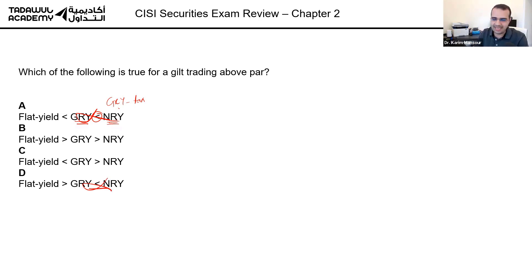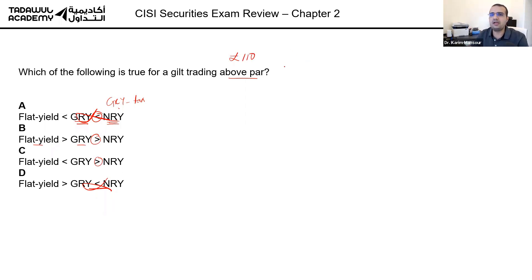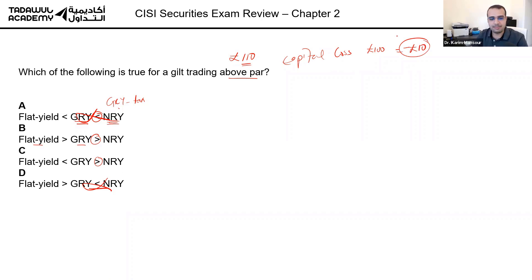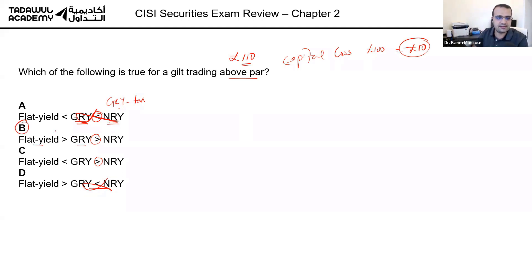That leaves us with choices B and C. We need to compare the flat yield and the gross redemption yield. If you buy a bond above par — for example at 110 pounds — you are going to suffer a capital loss on redemption because the issuer takes the bond and gives you only 100 nominal. So the redemption yield absorbs that loss and the gross redemption yield is going to be less than the flat yield. The answer is B.